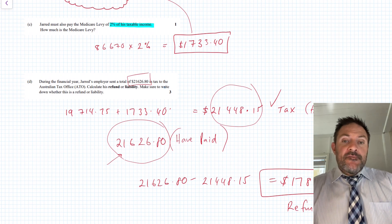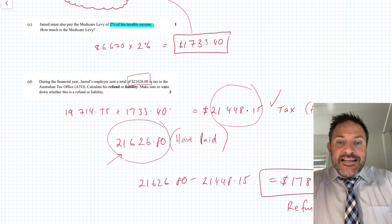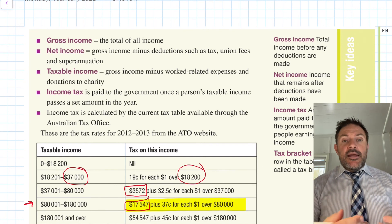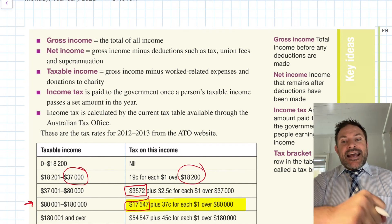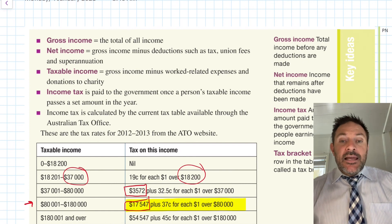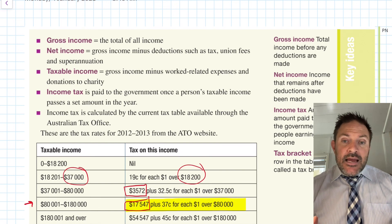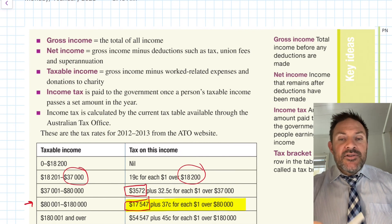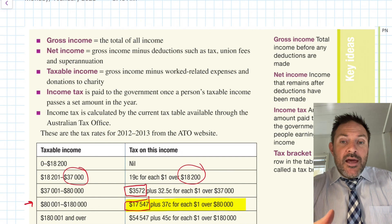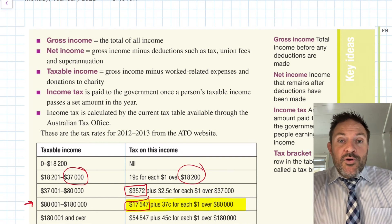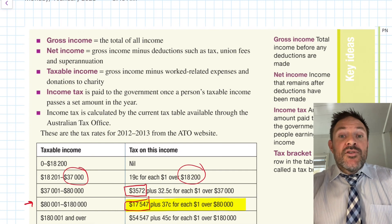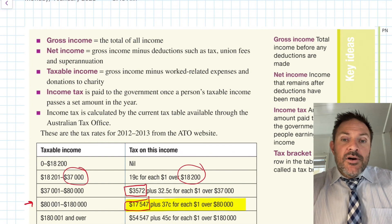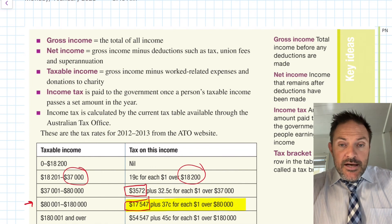To recap: gross income is what your employer pays you; net income is what goes into your account after deductions; taxable income is what you believe you should be taxed on, which you use in the tax table to find your income tax. The Medicare levy is 2% of taxable income. Combined with your PAYG/PAYE contributions, you work out your refund or liability. You'll revisit this in Years 10, 11, and 12 — it's important for real life too.